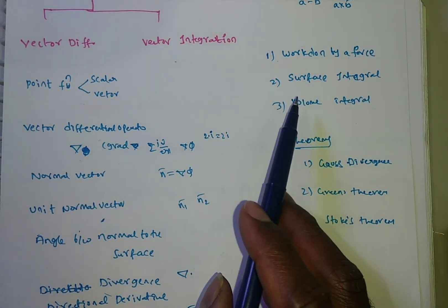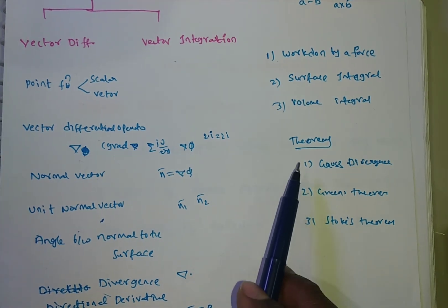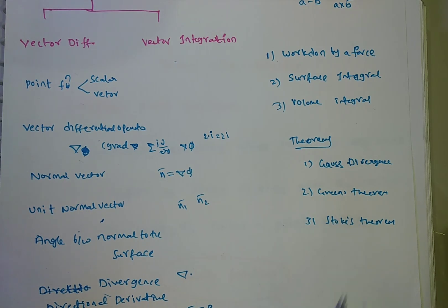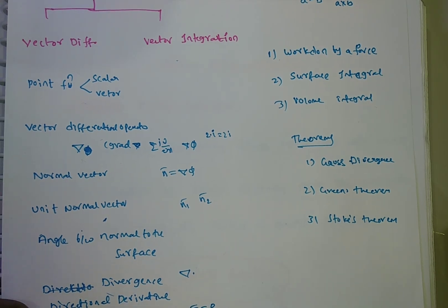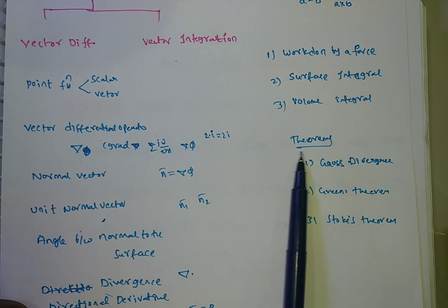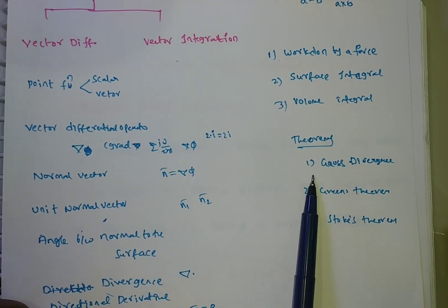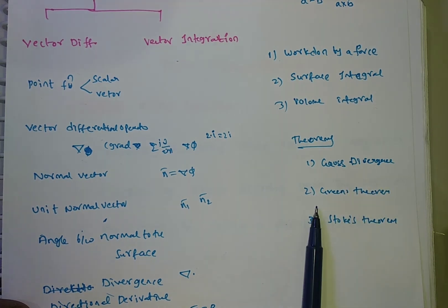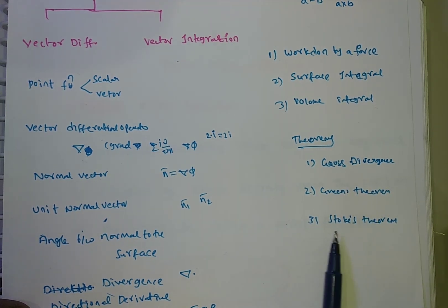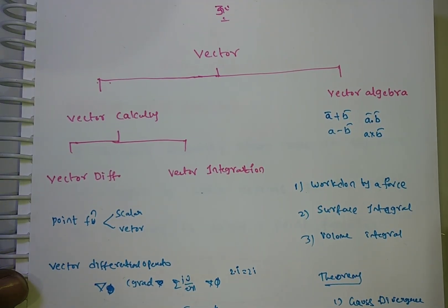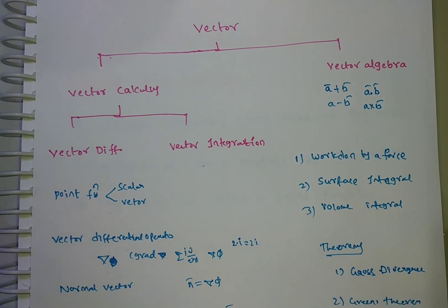Based on line, surface, and volume integrals, we have three theorems in vector integration: the first theorem is Gauss divergence theorem, the second is Green's theorem, and the third is Stokes theorem. So in engineering, the entire vector topic has two units — vector differentiation and vector integration. Thank you for watching this video.